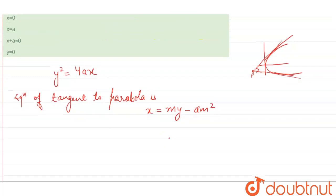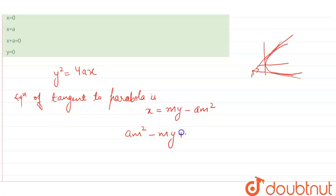So the equation of tangent is this, this is equal to am square minus m y plus x equals to 0. As this is quadratic, it has two roots,